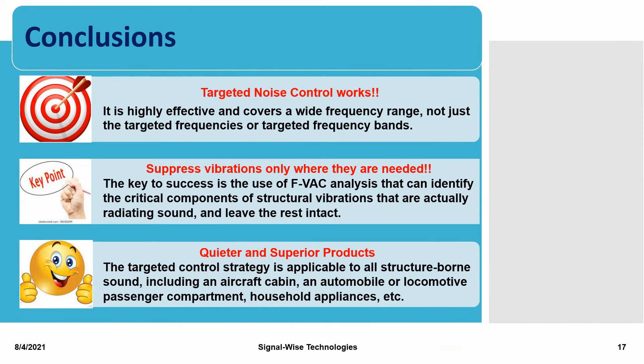In conclusion, we can state that targeted noise control works. This strategy is highly effective and covers a wide frequency range, not just the targeted frequencies or targeted frequency bands. We can suppress structural vibrations only where they are needed. The key to success is the use of FVAC analysis that can identify the critical components of structural vibrations that actually radiate sound and leave the rest intact.